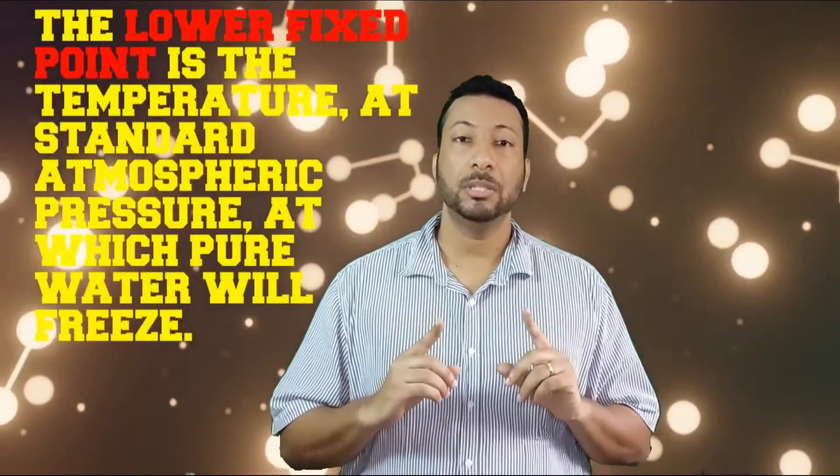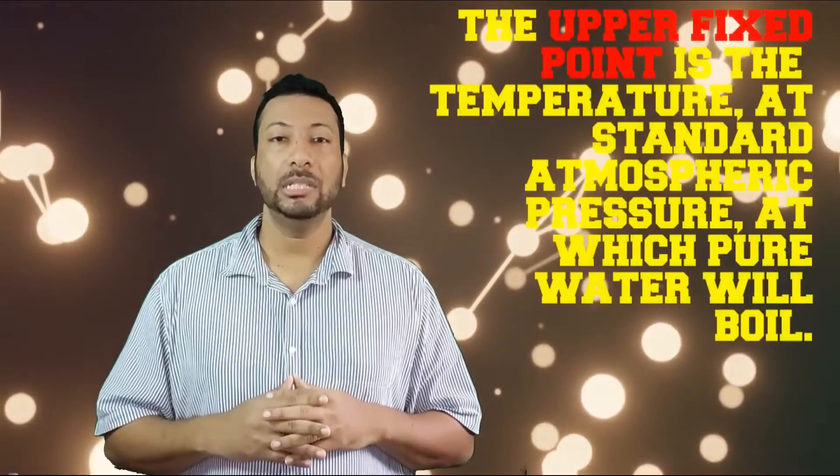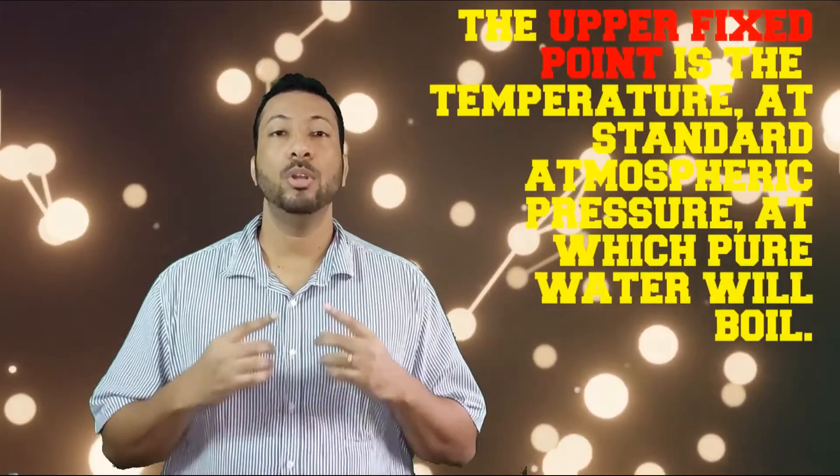So, the Celsius scale is based on the boiling points and the freezing points of water at standard atmospheric pressure, meaning at the Earth's sea level. So, Celsius devised his scale to be 0 degrees, which is the temperature at which water would freeze. And, 100 degrees Celsius is the temperature at which water would boil. So, exactly how did Celsius go about calibrating his scale? So, what he did was, he took some pure ice and he crushed it up and put it into a funnel.